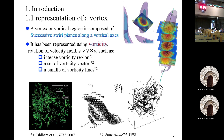A vortex or vortical region is composed of successive surplanes along a vertical axis. It has very often been represented using vorticity — a rotation of the velocity field — including intense vortex theory, vortex regions, or a set of vortex vectors, and a bundle of vortex lines. A vortex line is simply a line whose tangential vector is the vortex vector.